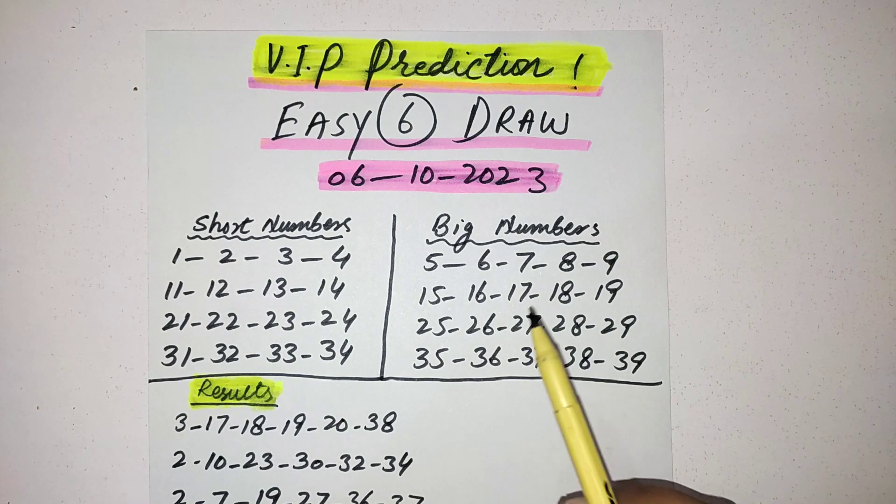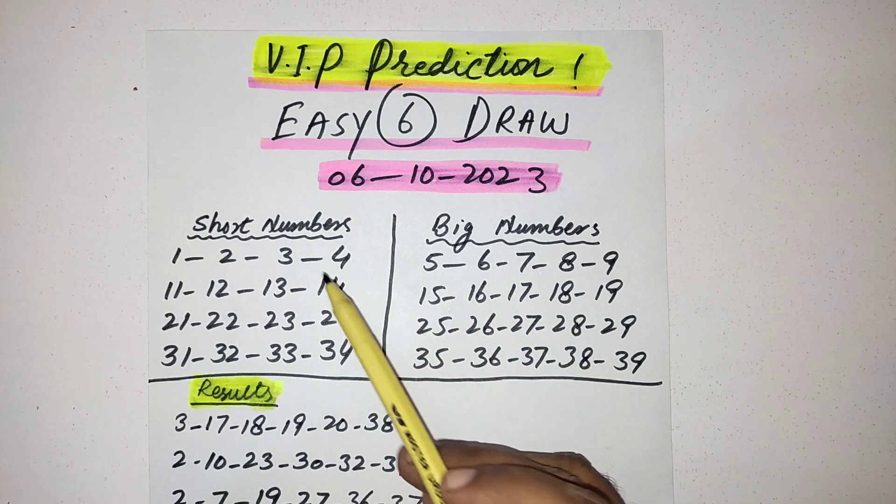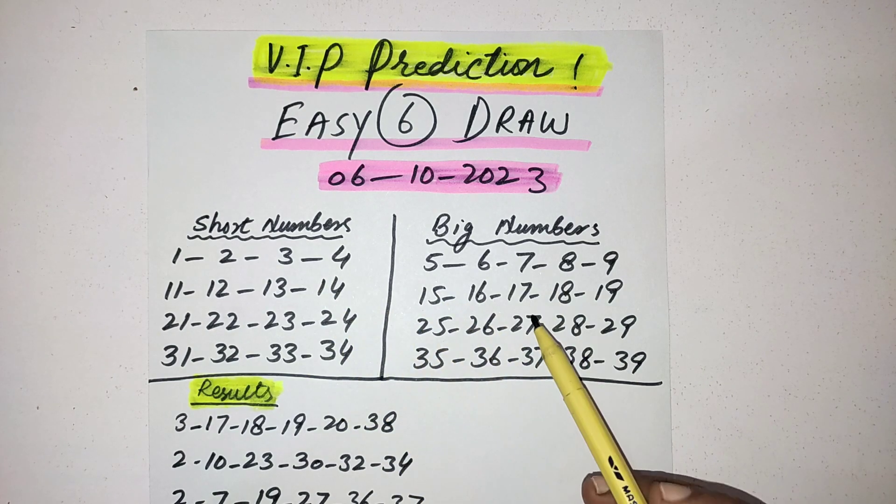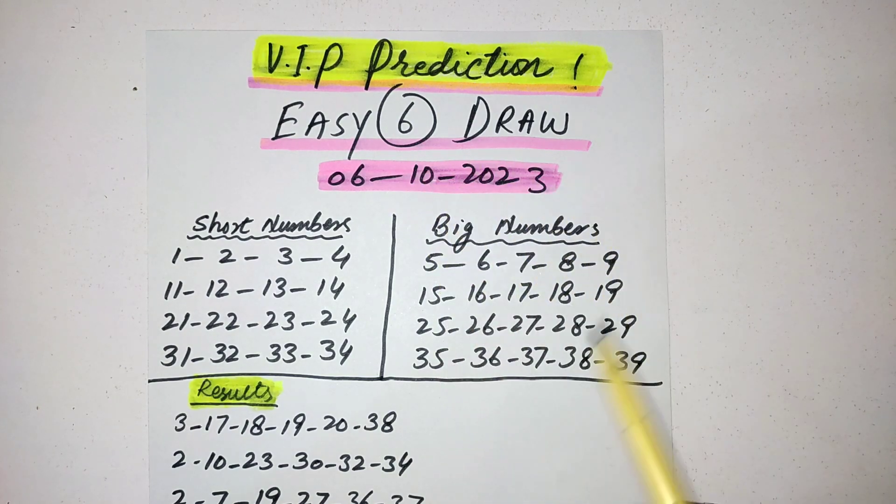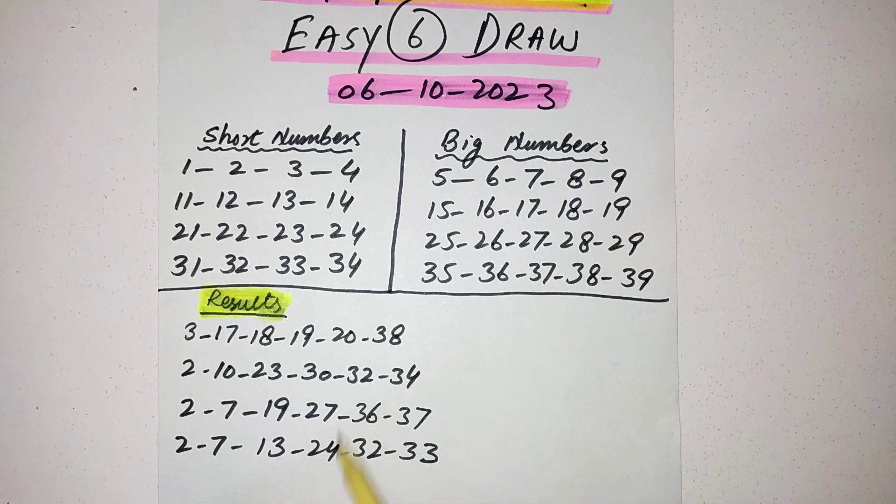My best friends, in many videos I already showed that these are the short numbers and these are the big numbers in Easy 6 lottery. The last big number is 39. In recent draws of Easy 6, these are the four results, current previous results of Easy 6 draw.